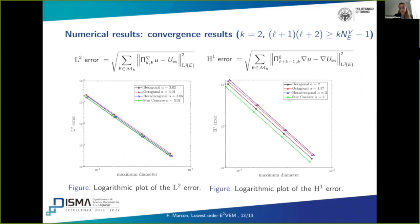Finally, here, I present the convergence results that we obtain. For instance, for order k equal to two, where we obtain convergence rates of three for the L2 error and of two for the H1 error. And I want to underline the sufficient condition on L that we use and we prove numerically. In this case, that is the one that I write at the top of this slide, that is that L plus one times L plus two has to be greater or equal than k times the number of vertices of the polygon minus one. And with these results, I finish my talk and thank you all for the attention.